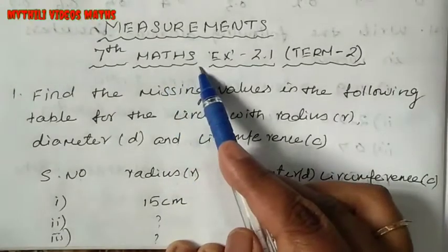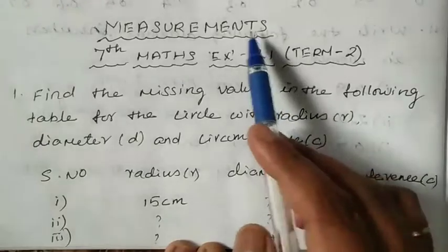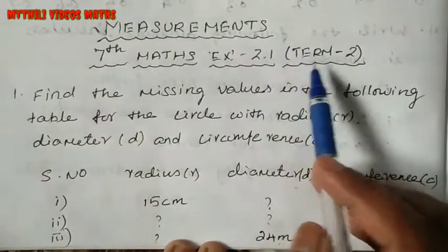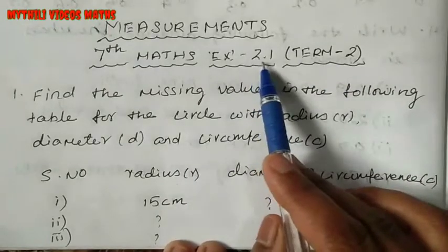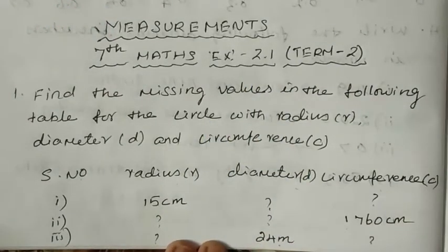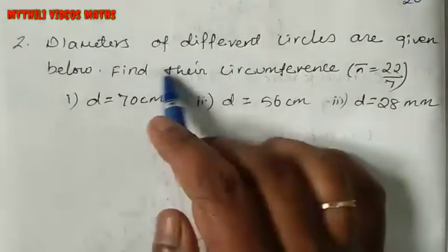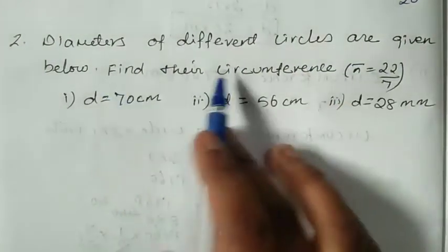This is 7th standard maths, Exercise 2.1, that is the measurement chapter. So measurement chapter term 2, exercise 2.1 — we already saw the first sum, now we will see the second sum. Diameters of different circles are given below.